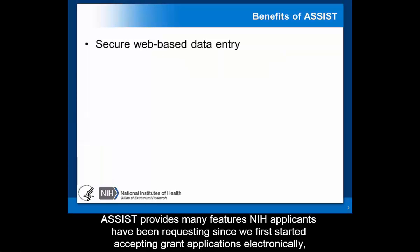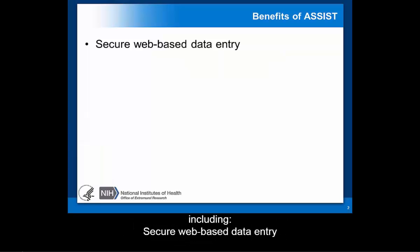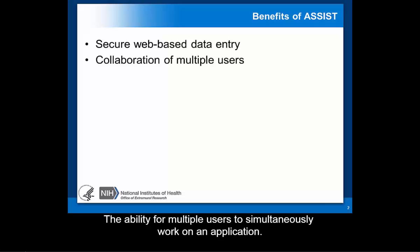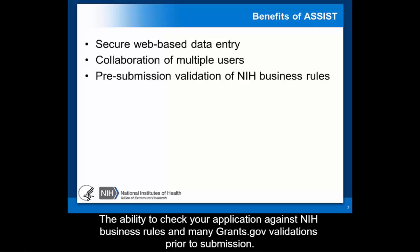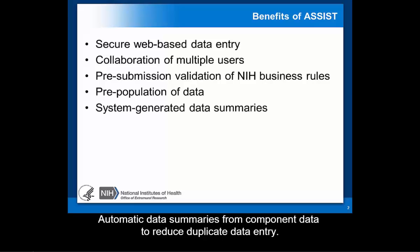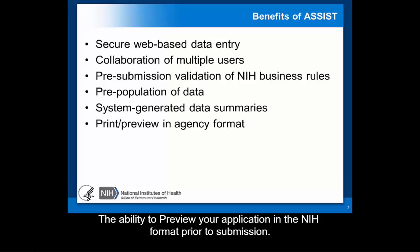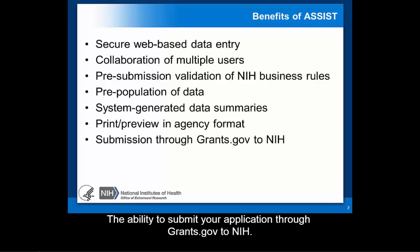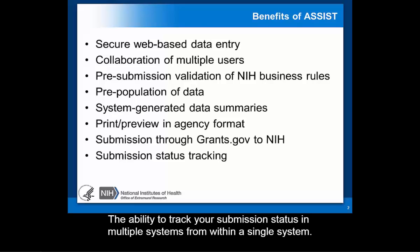ASSIST provides many features NIH applicants have been requesting since we first started accepting grant applications electronically, including secure web-based data entry, the ability for multiple users to simultaneously work on an application, the ability to check your application against NIH business rules and many Grants.gov validations prior to submission, pre-population of data from eRA Commons profiles and from one part of an application to another, automatic data summaries from component data to reduce duplicate data entry, the ability to preview your application in the NIH format prior to submission, the ability to submit your application through Grants.gov to NIH, and the ability to track your submission status in multiple systems from within a single system.